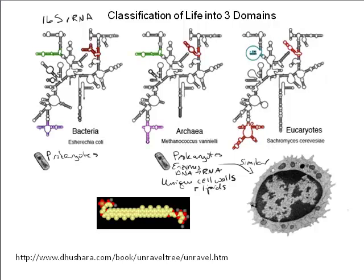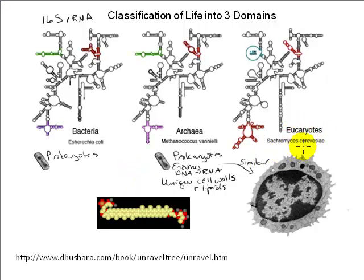For example, they use the opposite enantiomer of glycerol to build their phospholipids compared to bacteria and eukaryotes, and some of their phospholipids are actually two-headed molecules that pass all the way through the bilayer. Based on molecular criteria rather than superficial physical criteria, all lifeforms are classified as belonging to one of three domains: bacteria, consisting of broadly distributed single-celled microbes; archaea, also prokaryotic and capable of thriving in extreme environments; and eukaryotes, encompassing both single-celled and multicellular lifeforms.